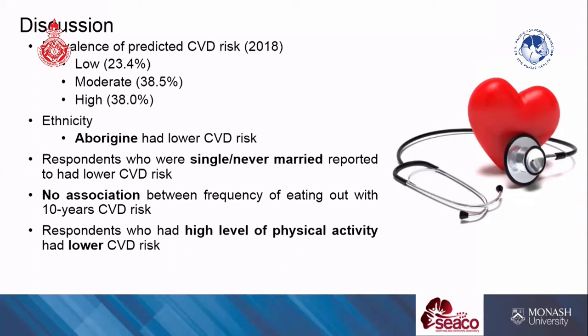From the aspect of marital status, respondents who were never married had lower cardiovascular risk, whereas those who were married, widowed, separated, or divorced had higher cardiovascular risk. Interestingly, there was no significant association between frequency of eating out and 10-year CVD risk for the 2018 dataset. However, respondents with a high level of physical activity had lower cardiovascular risk in 2018.